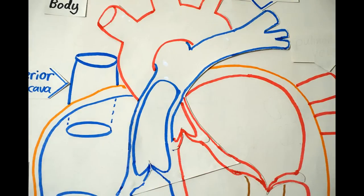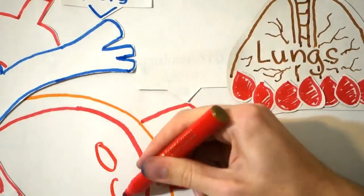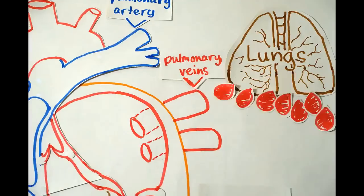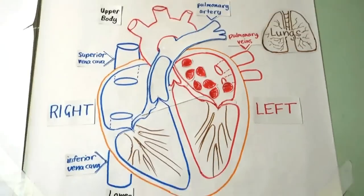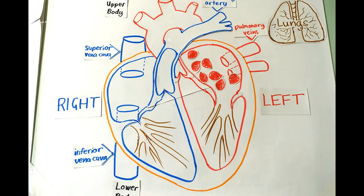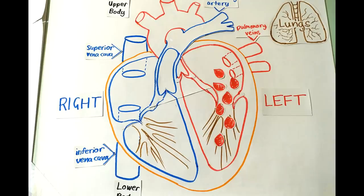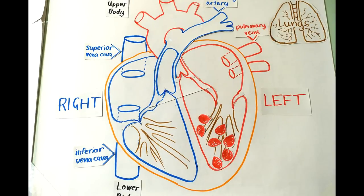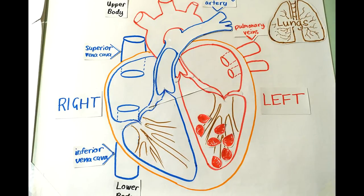After oxygenation, the blood returns to the left side of the heart via the pulmonary veins and enters the left atrium. Contraction of left atrium opens the mitral valve, and the blood is pumped into the left ventricle. Once the left ventricle is filled, the mitral valve will close, just like the tricuspid valve does.